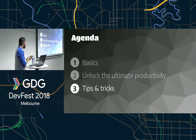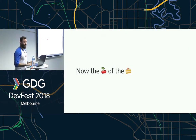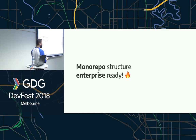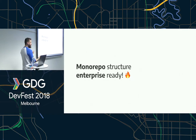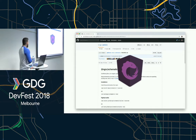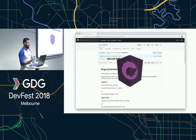Now for tips and tricks. There's a tool called NX — an extension for the CLI that gives you a monorepo structure, enterprise-ready. You can create multiple projects and libraries inside the same structure sharing packages and configurations, which gives you a lot of productivity. Also, if you're using NGRX, leverage the schematics from the NGRX organization — you don't need to write all that NGRX boilerplate. Just run the schematics.